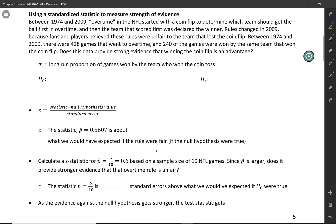They changed the rules in 2009 because fans and players thought these rules were unfair to the team that lost the coin flip. Between 1974 and 2009, there were 428 games that went to overtime, and 240 of the games were won by the same team that won the coin flip. Does this provide strong evidence that winning the coin flip is an advantage?